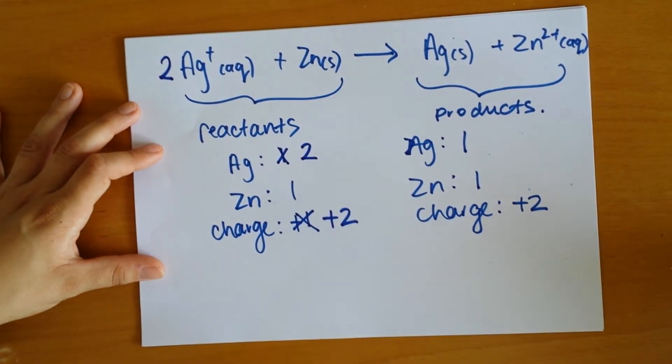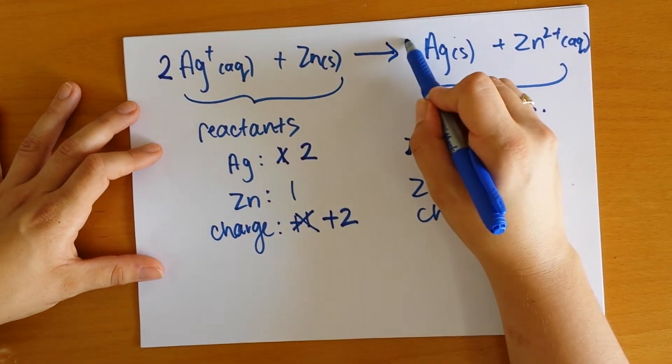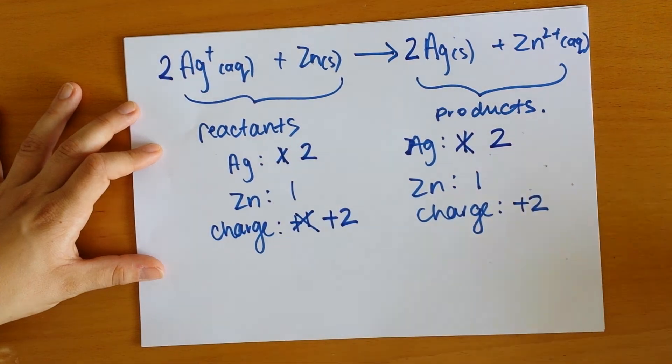Now we've got two silver ions on our reactant side of the equation, so we need to balance the silver on the other side. To do that, we add another coefficient in front of the silver on the other side - we have 2.